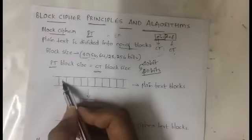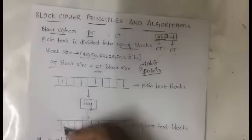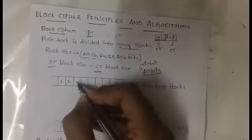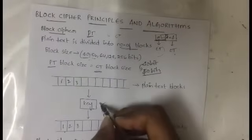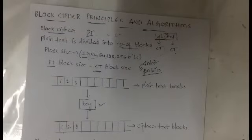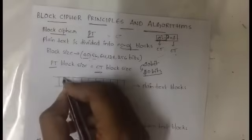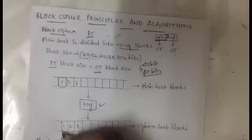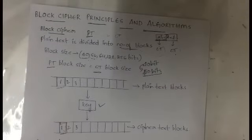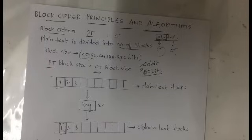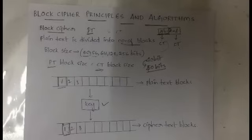For every plain text block, there is one corresponding cipher text block. The conversion of plain text to cipher text happens through a key — a secret key or secret code. By using this secret key, we convert plain text into cipher text. For each and every single block of plain text, one individual cipher text block will be generated. So first, whatever plain text you have, you divide it into a number of blocks, then you use the key to convert it into cipher text.